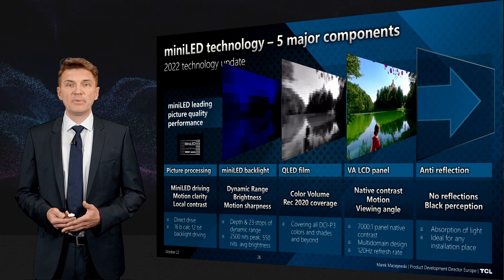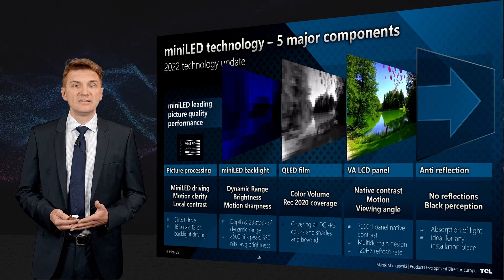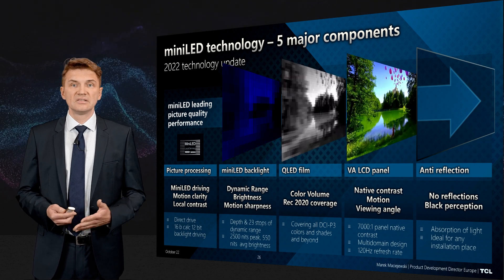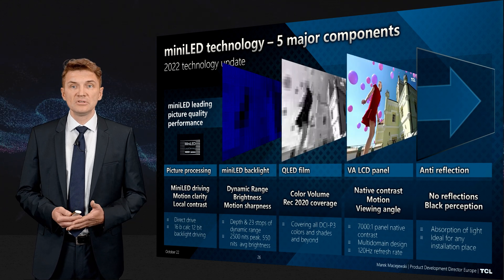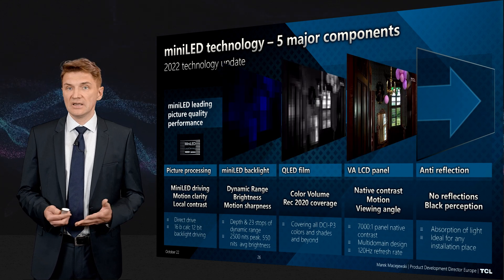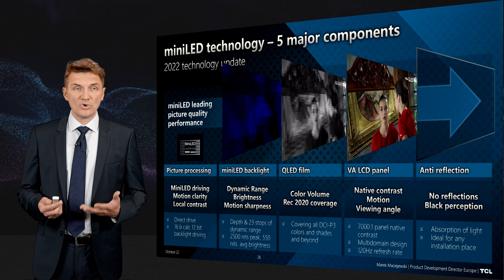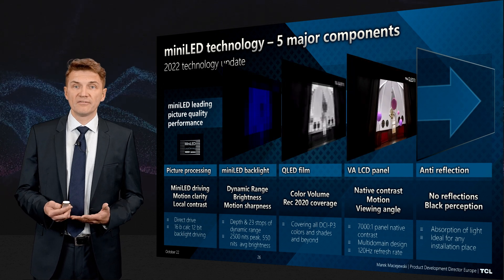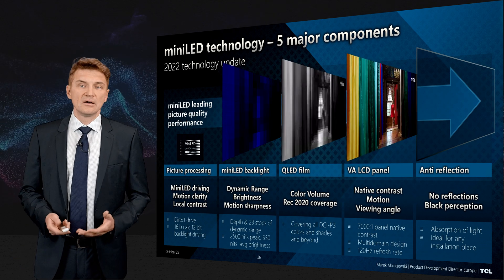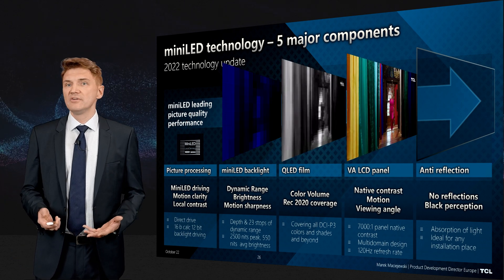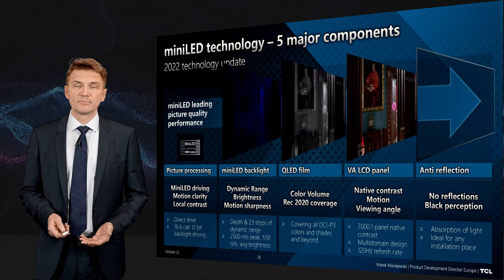Then we have a VA panel, which delivers very high native contrast and a very wide viewing angle. The last component is anti-reflection coating, which gives us black perception and eliminates reflections from different light sources — such as windows in your living room — as everything is absorbed.